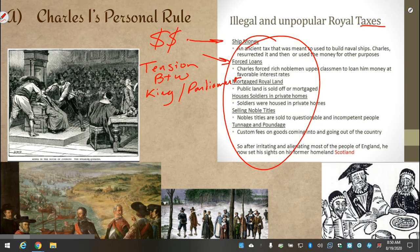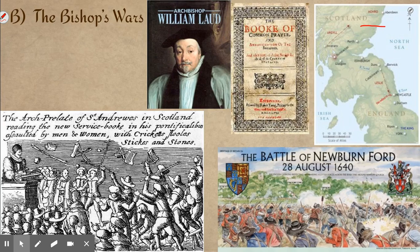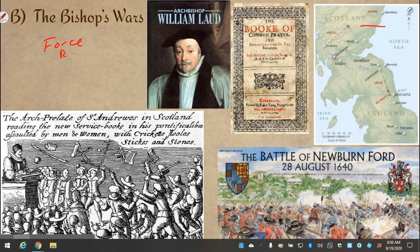All this tension finally boiled to a head when Charles got himself very unfortunately involved in a series of different expensive wars that he desperately needed money for. He got involved in wars, especially with the Scots, because he tried to force everyone to be the same religion. As you hopefully remember from previous lectures, Queen Elizabeth had basically decided to look the other way and allow the English to go their own way and basically choose whatever form of Protestantism they wanted, and even allowed some Catholicism.